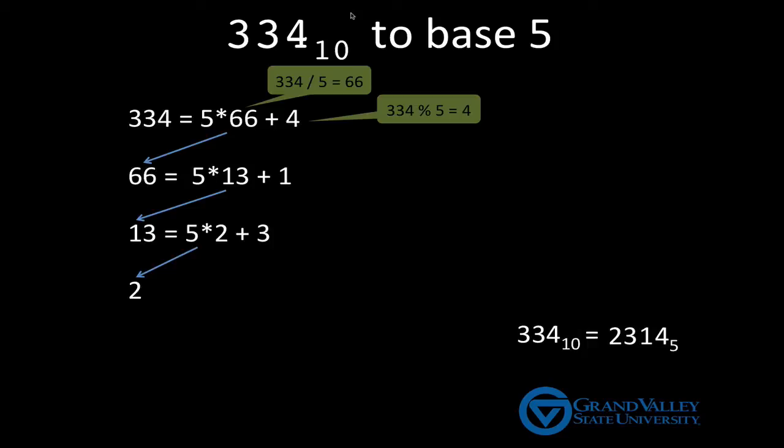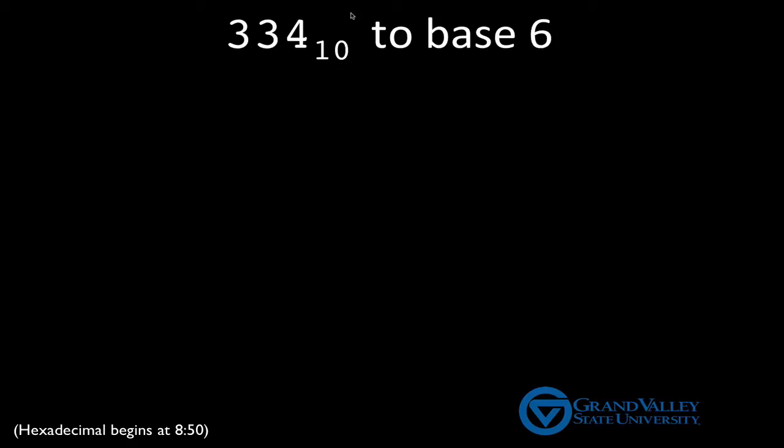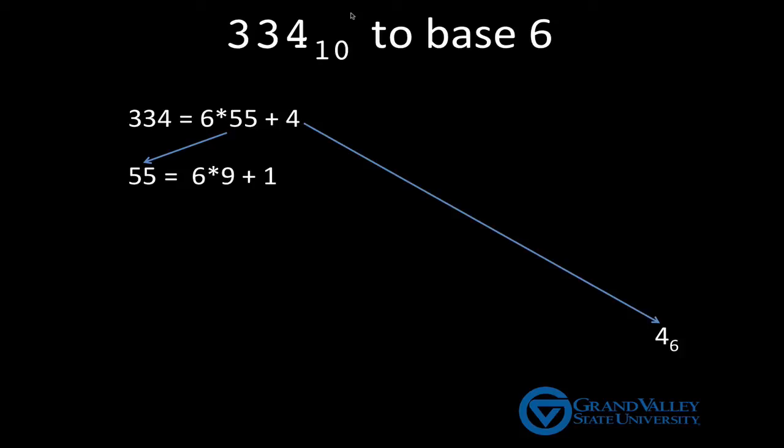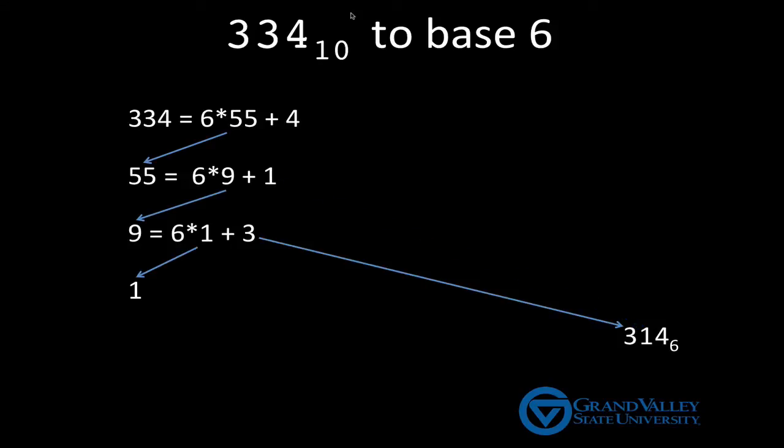Let's do one more example. This time let's write 334 in base 6. 334 is 6 times 55 plus 4, so we write down the 4 and then write 55 in base 6. 55 is equal to 6 times 9 plus 1, so we write down the 1 and then write 9 in base 6. 9 is equal to 6 times 1 plus 3, so we write down the 3 and then also add the remaining 1 to the beginning of the number, which shows us that 334 is 1314 base 6.